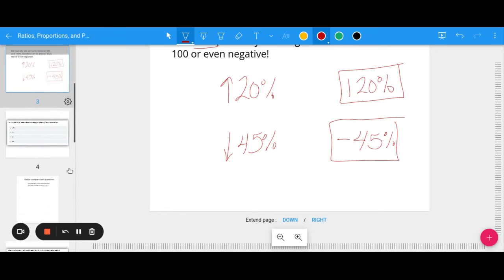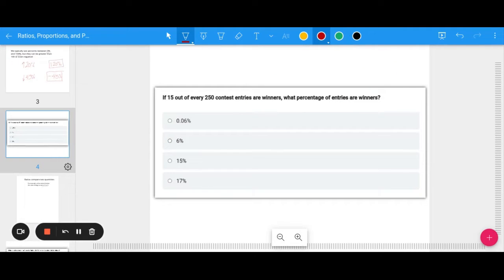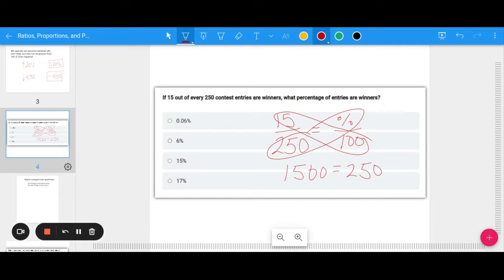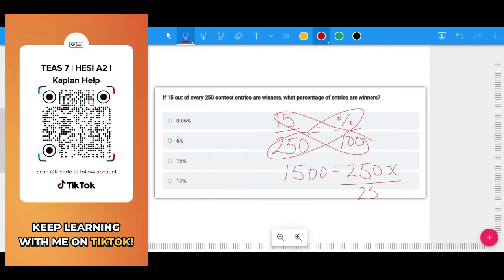Let's look at an example. If 15 out of every 250 contest entries are winners, what percentage of entries are winners? We take 15 over 250 and set that equal to a percent over a hundred. That's our part over whole equals percent over a hundred. Then cross multiply: 1,500 equals 250 times x. When I divide by 250, I get 6, so x equals 6, which means the percent is 6%.